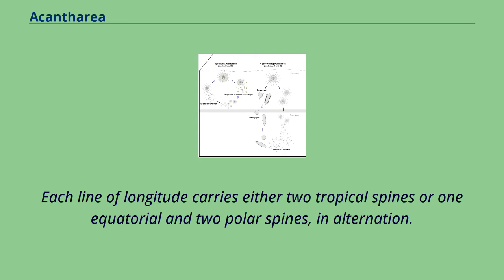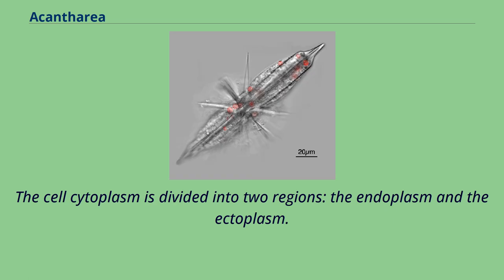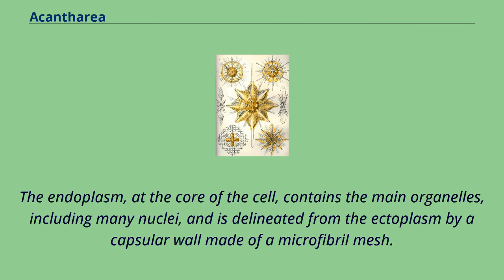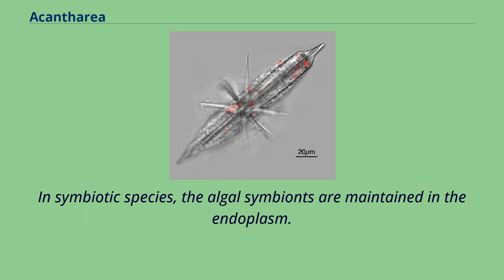The cell cytoplasm is divided into two regions: the endoplasm and the ectoplasm. The endoplasm, at the core of the cell, contains the main organelles, including many nuclei, and is delineated from the ectoplasm by a capsular wall made of a microfibral mesh. In symbiotic species, the algal symbionts are maintained in the endoplasm.